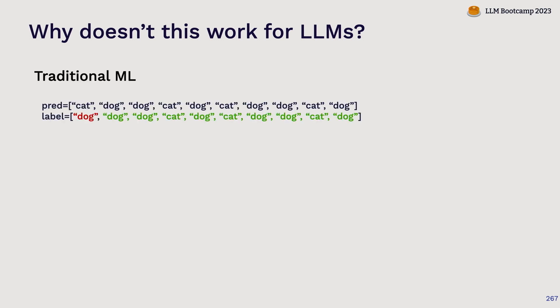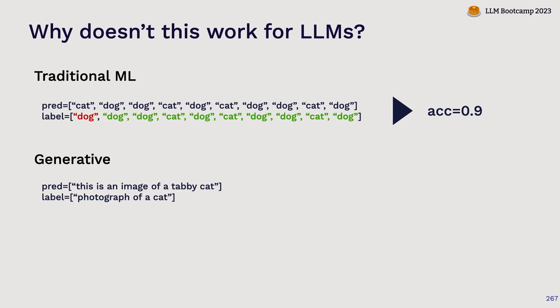Another big difference is the generative paradigm. In traditional machine learning you're mostly doing things that look like classification — predicting cats or dogs — where you can objectively measure accuracy. But in generative AI, your prediction might be 'this is an image of a tabby cat' while the label says 'this is a photograph of a cat.' Is that a good prediction or a bad prediction? It depends on what you're going for with your task. So what metric do you use? How do you actually quantify the accuracy of a model in this paradigm? It's a really hard challenge.